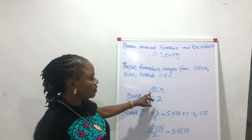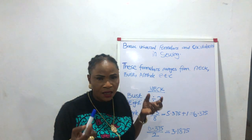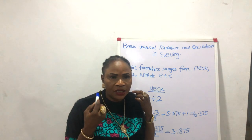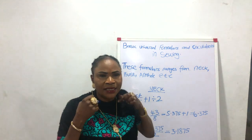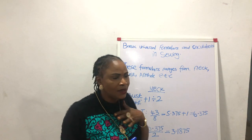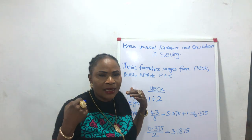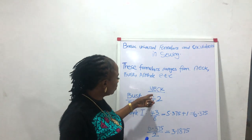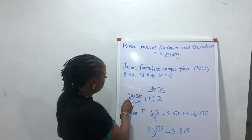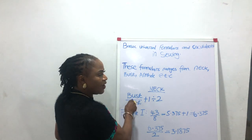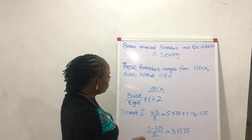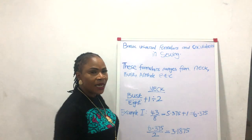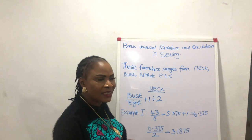We are starting from the neck. We have the neck here. You have to take the measurement for neck even if you don't know the customer, have never seen them before, and want to measure the neck — but you have the bust, you can get the neck. For the neck: use the bust measurement, divide the bust by 8, then plus 1, then divide by 2, and you get the exact neck.